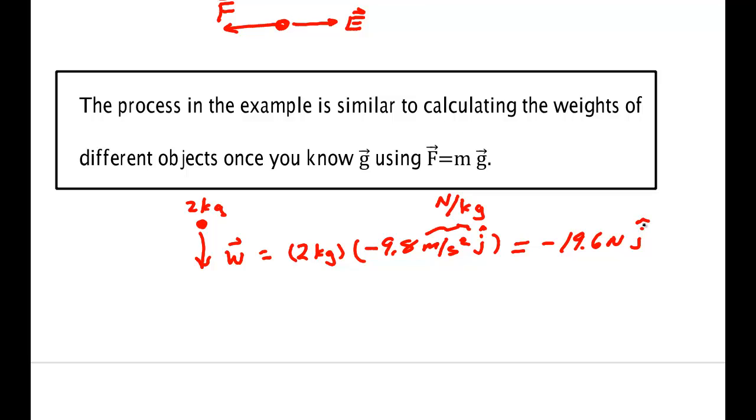So we put those two together and we get minus 19.6 newtons j hat. This is the same sort of process. Here the source that causes it is mass. In electric field, the source is in fact charge.